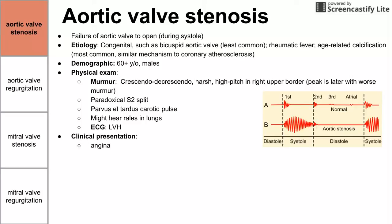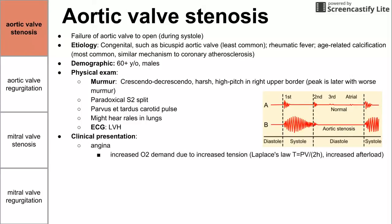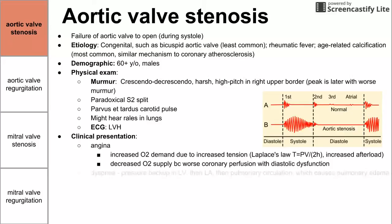On clinical presentation, the patient might have angina, which is increased oxygen demand. This makes sense because we see increased tension according to Laplace's law. Since there is more pressure in the left ventricle because we're not able to get through that valve, there is increased afterload leading to higher O2 demand. We also have decreased O2 supply because of diastolic dysfunction from left ventricular hypertrophy, impairing coronary artery perfusion. Both of those contribute to angina.